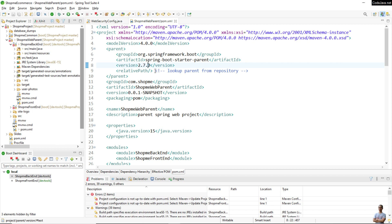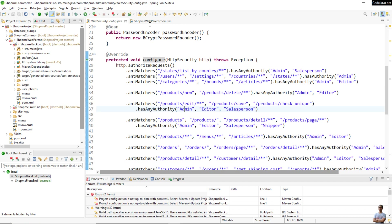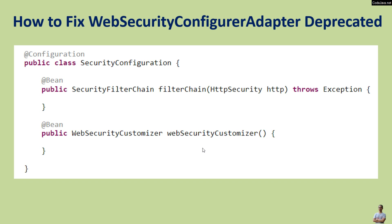You will get this warning message if you use Spring Boot version 2.7.0 or newer, or Spring Security version 5.7.1 or newer. This is the new code you should use to get rid of the warning. Instead of extending WebSecurityConfigurerAdapter, in your security configuration class you declare two beans: one of type SecurityFilterChain to configure HTTP security, and a second bean of type WebSecurityCustomizer for configuring web security.